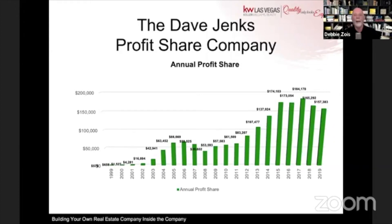My almost 1,200 agents do about $250 million of real estate sales every month. I have a billion-dollar company — the Dave Jenks Profit Share Company — doing $1.3 billion a year in real estate sales, and it sends me $160,000 to $180,000 of pure passive income. I'm a piker in the game.